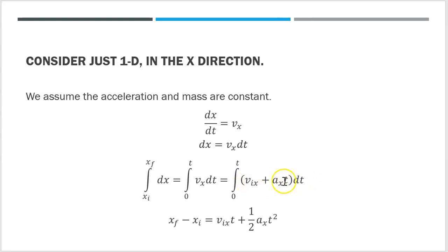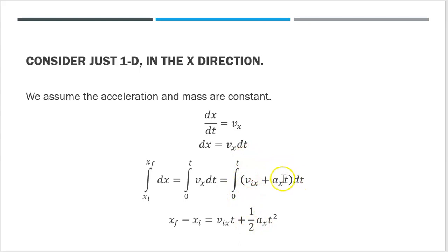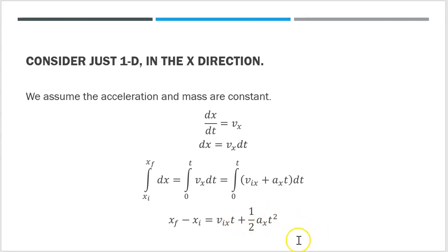When I integrate vix, which is a constant with respect to t, I get vix times t, evaluated from 0 to t, giving vix times t. Combining the left-hand side and right-hand side, I end up with: x final minus x initial equals vix times t plus one-half ax times t squared. That should remind you of the kinematics equation from your 1000-level physics class — that's one of the kinematics equations.